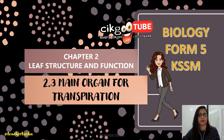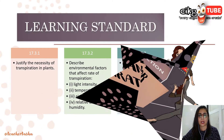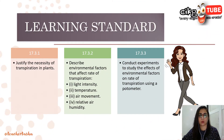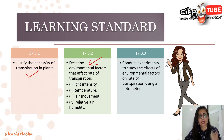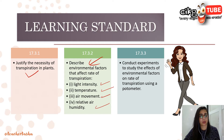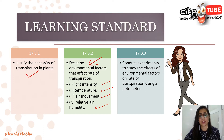Let's go through the learning standards. There are only three learning standards here. First is to justify the necessity of transpiration — why is transpiration important in plants. Second is to describe the environmental factors that can affect the rate of transpiration: light intensity, temperature, air movement, and relative air humidity.